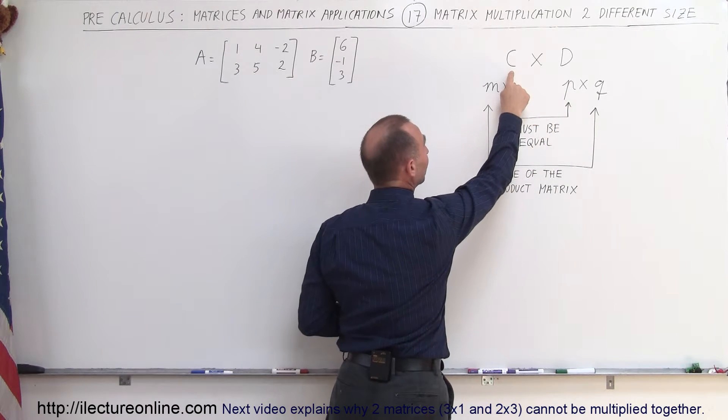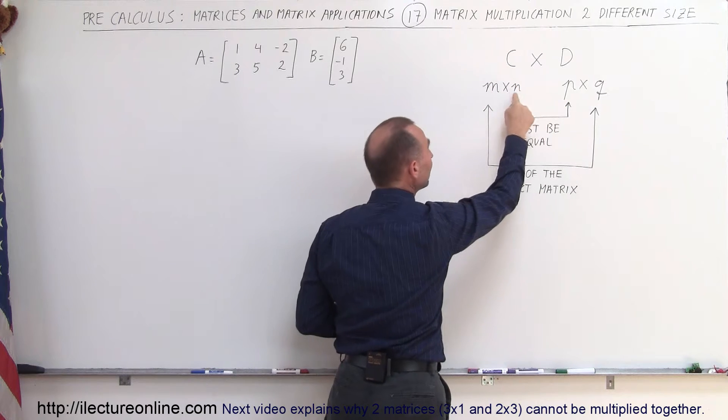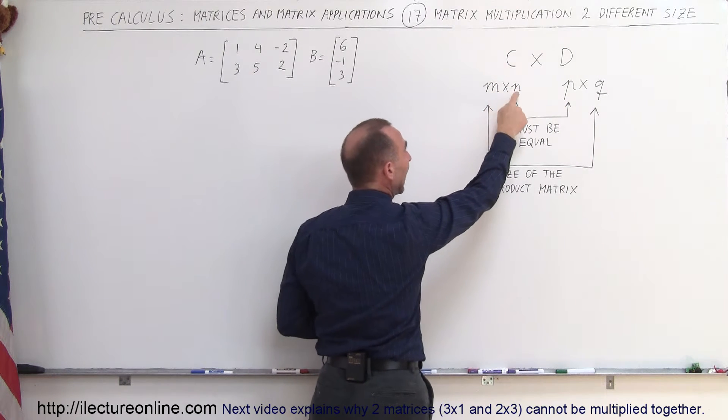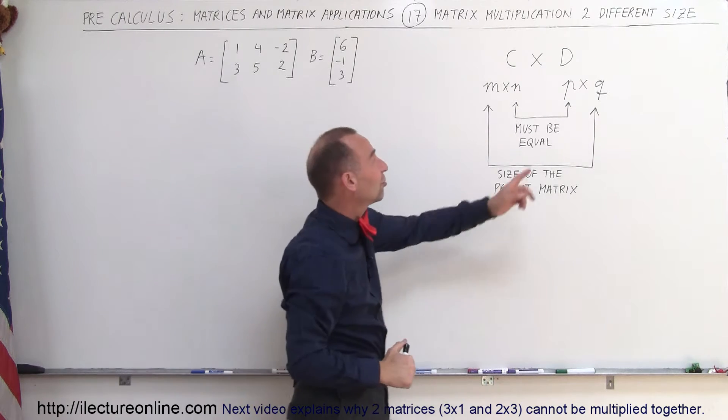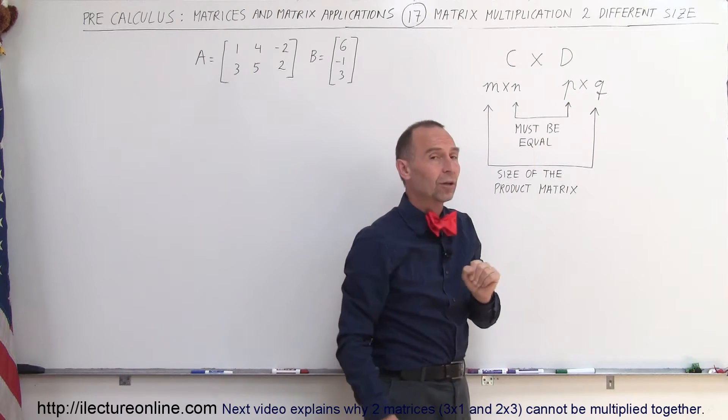For example, we have two matrices C and D. Matrix C has dimensions M by N, which means M number of rows and N number of columns. And matrix D has a dimension P by Q, which means P number of rows and Q number of columns.